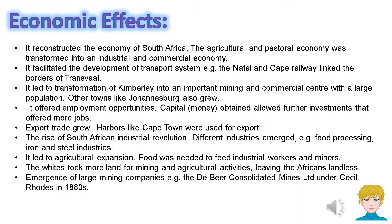The rise of the South African Industrial Revolution was also a result of the Mineral Revolution. Different industries emerged because they were needed, such as food processing and iron and steel industries. It also led to the expansion of agriculture because more food was needed to feed the industrial workers and miners, and so farmers needed to farm more food for commercial purposes and not just for survival. Unfortunately, the whites took more land for mining and agricultural activities, leaving the Africans landless — they did this through different laws and legislations. There was also the emergence of large mining companies, and one that we did learn about: the De Beers Consolidated Mines, which was started under Cecil John Rhodes.